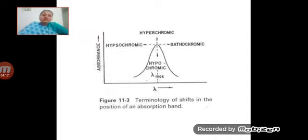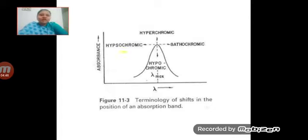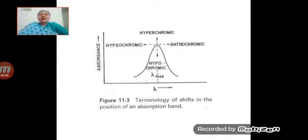Next is the hypsochromic shift, which is opposite to the bathochromic shift. It is called the blue shift. In the hypsochromic shift, there is a shift of absorption maxima towards the shorter wavelength, which may occur because of removal of conjugation in the system, removal of the auxochrome, or by change of solvent. It is a shift towards the blue region of visible light.